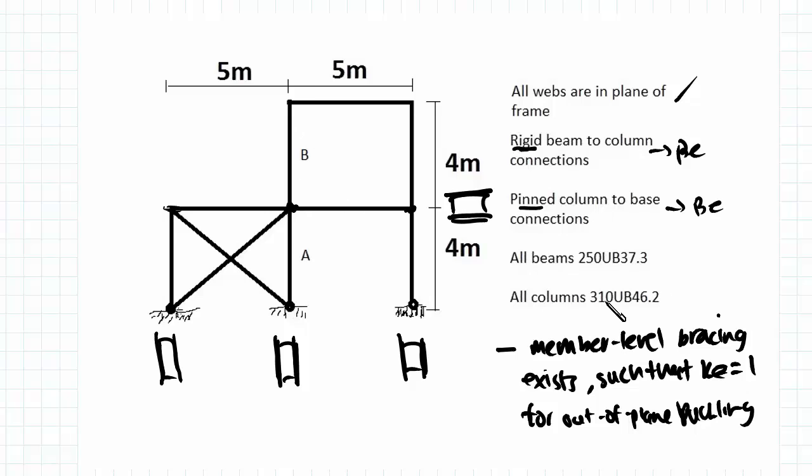All columns used are 310UB46.2 and all beams used are 250UB37.3. So all the beams are horizontal, all the columns are vertical.